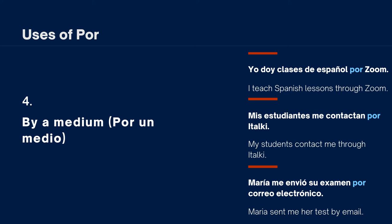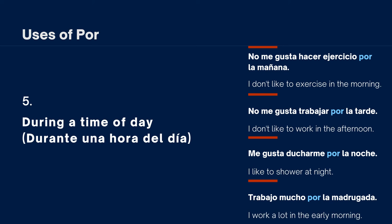The fifth use of por is during a time of day — durante una hora del día. Examples: 'No me gusta hacer ejercicio por la mañana' (I don't like to exercise in the morning); 'No me gusta trabajar por la tarde' (I don't like to work in the afternoon); 'Me gusta ducharme por la noche' (I like to shower at night); 'Trabajo mucho por la madrugada' (I work a lot in the early morning — madrugada means between 1 a.m. and 5 a.m.).